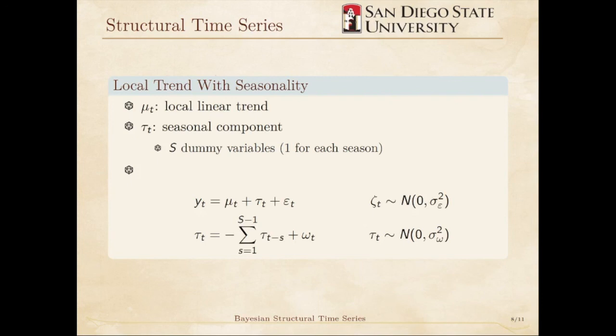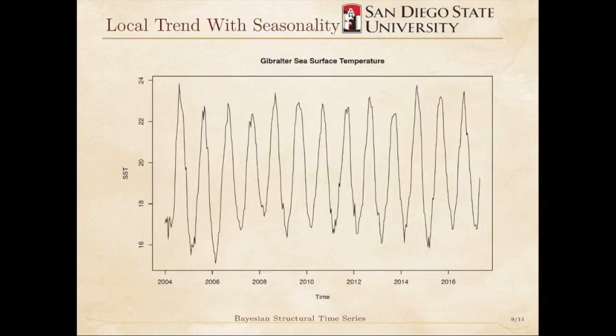If we consider MuT to be the local level model, then we would have just three parameters because there would be no trend term. Basically, we have a noise term and corresponding variance for each of our state components. The model might look something like this.